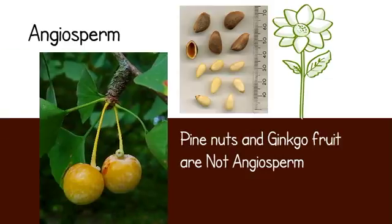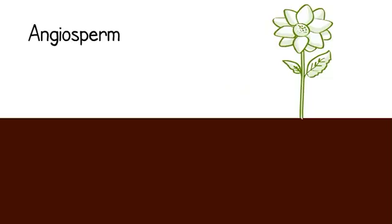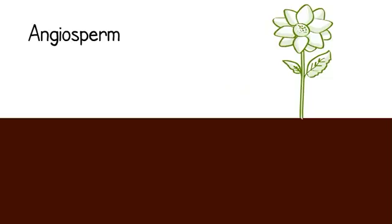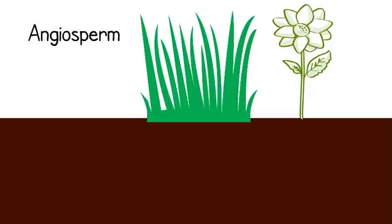Angiosperms have flowers. All plants with flowers are angiosperms. Angiosperms can be divided into two groups: monocots and dicots. Monocots are grasses, and dicots are broadleaf plants.